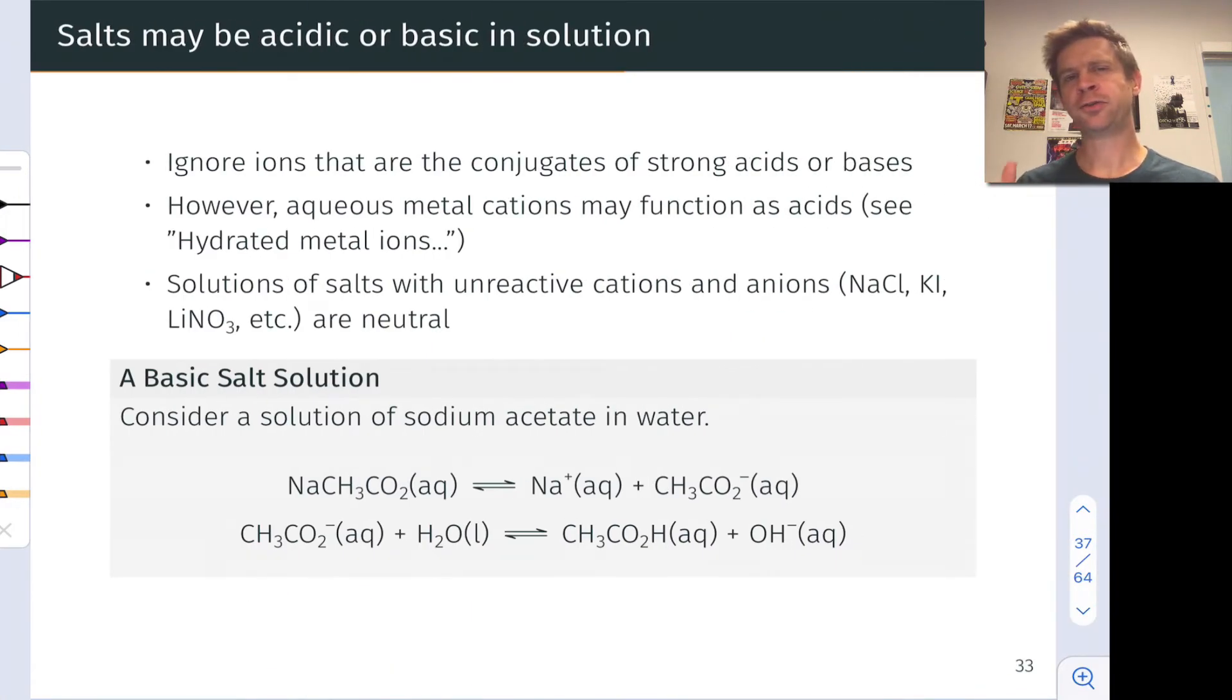In looking at salts, there are some general guidelines we can use to heuristically find that active ion without going and looking up Ka and Kb values. One that's very important is to recognize the conjugates of strong acids or bases. These are ions that we can typically ignore.